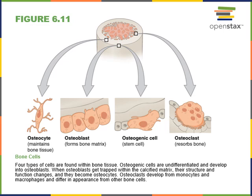The osteoblasts come from a stem cell known as an osteogenic cell, sometimes called an osteoprogenitor cell. Osteogenic cells divide and differentiate into osteoblasts that produce the matrix of bone, the osteoid. Once the osteoblasts surround themselves with osteoid, they differentiate into osteocytes.